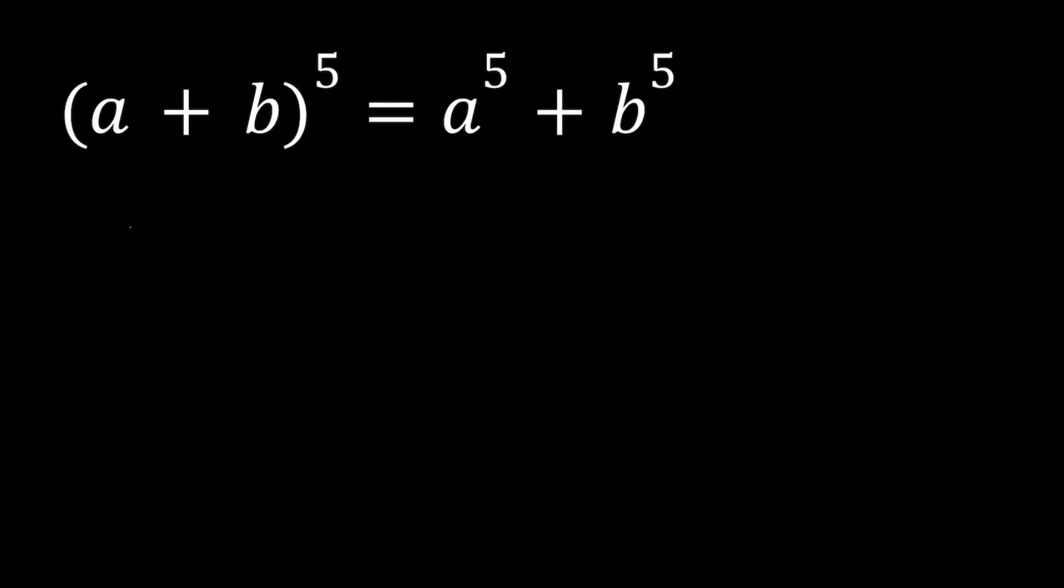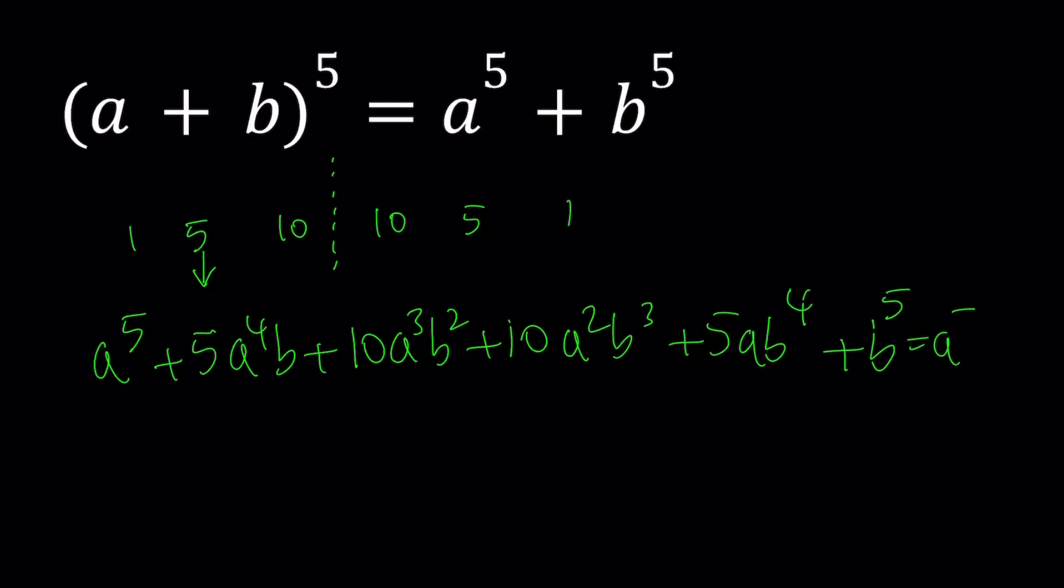And for the fifth power, it's 1, 5, 10, 10, 5, 1. And notice that there is a symmetry. Okay, great. So let's go ahead and expand it. And by the way, these are coefficients, but the powers also play a role. We start with the highest power of a and with the lowest power of a, which is a to the power of zero, and the b is vice versa. So start with b to the zero and go up. All right, so here's how it goes. a to the fifth power plus 5a to the fourth b plus 10a cubed b squared plus 10a squared b cubed plus 5ab to the fourth power plus b to the fifth power. And that is equal to a to the fifth plus b to the fifth.